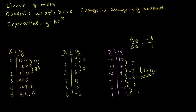Let's look at the first dataset. We went from 120 to 180 — an increase of 60. Then 180 to 270 — an increase of 90. Then 270 to 405 — an increase of 135. Now the second differences: from 60 to 90 that's a change of 30, and from 90 to 135 that's a change of 45. The second differences are not constant — 30 then 45 — so this is not a quadratic function.